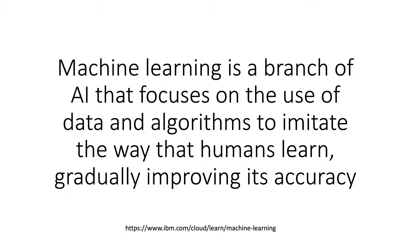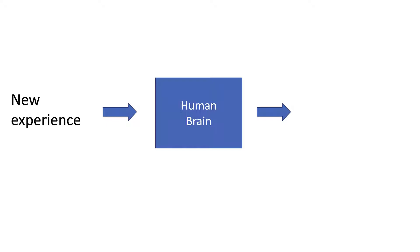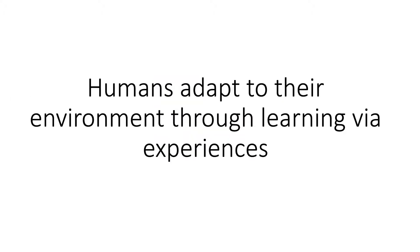That's a very broad definition, so let's look at some examples. If we think of the human brain, we have experiences — whether physical or cognitive. Every time we have an experience, our brain changes its neural pathways, which results in knowledge. Every time we have a new experience, whether the same or similar to previous ones, current neural pathways are strengthened or new pathways are built. This leads to new knowledge, because humans adapt to their environment through learning via experiences.